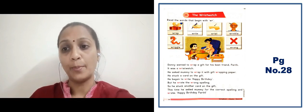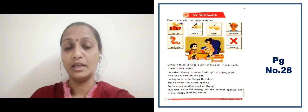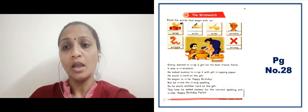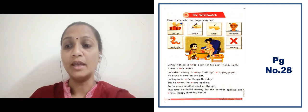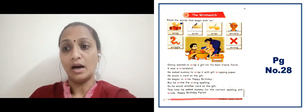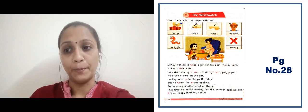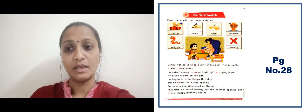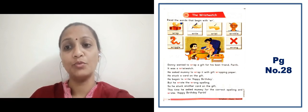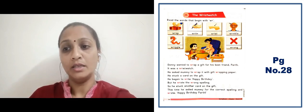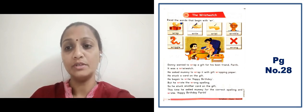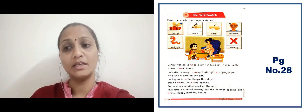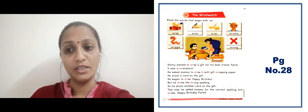Donnie wanted to wrap a gift for his best friend — Donnie ko apne best friend ke liye ek gift wrap karna tha. It was a wrist watch. He asked mommy to wrap it with gift wrapping paper — usne apni mama se gift wrapping paper manga jisse woh gift ko wrap kar sake. He stuck a card on the gift — usne card uske upar stick kiya. He began to write 'Happy Birthday' but he wrote the wrong spelling — unhone galat spelling likhi.